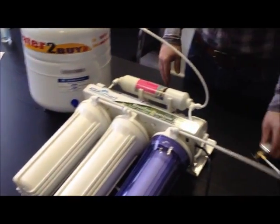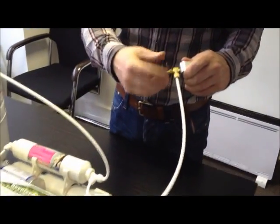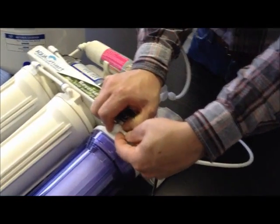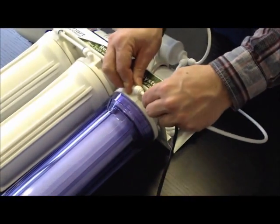The first thing to check is that you have a good water supply entering the first filter. Close the self-tapping valve, remove the tubing from the first filter, hold the tubing over a container and open the valve slowly. You should have a good water flow.